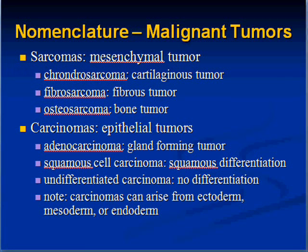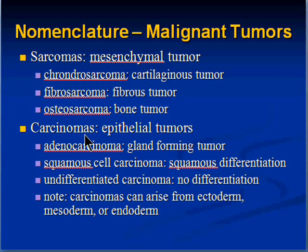Now that we have defined malignancies of connective tissue or mesenchymal tissue as being sarcomas, and we have defined malignancies of epithelial tissue as carcinomas, let's look at some of the common patterns of carcinomas.